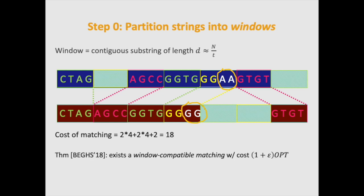And an important argument of BGHS is that there exists a window compatible matching with a cost of essentially 1 plus epsilon times the optimal.